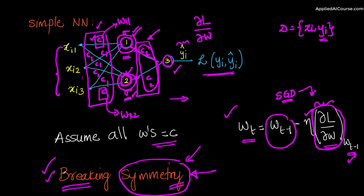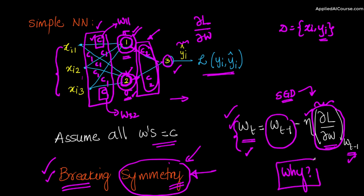Breaking symmetry might sound fancy, but even if you don't know the term, you can figure out this problem very easily if you just know the basics of how updates happen and the basics of back propagation. It's a very simple problem, but remember: in interview questions, 'why' or 'why not' questions are typically more challenging and more thought-provoking than 'what is something' or 'how is something done' — those are easier.